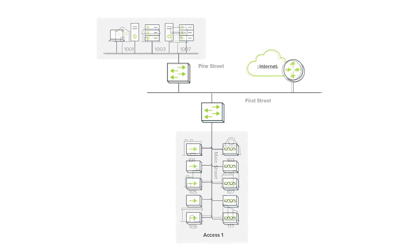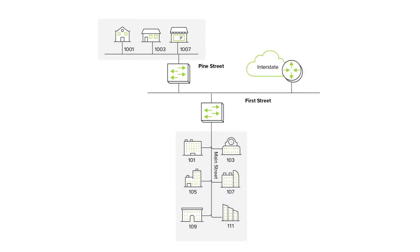But what if we look at the network this way? Now it kind of looks like a street map, doesn't it? You see which houses and buildings are on which streets and what their addresses are. You can figure out how to get from one place to another.